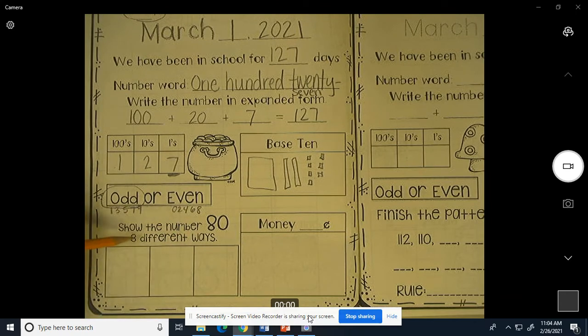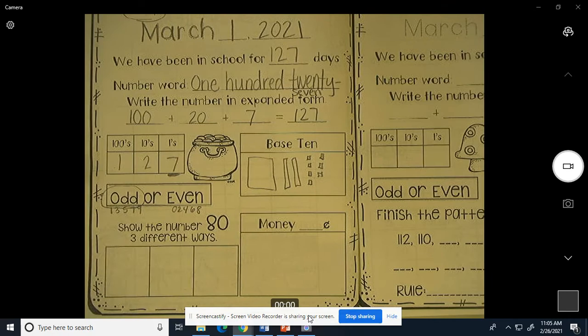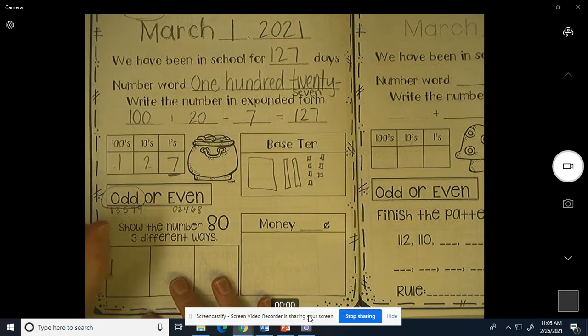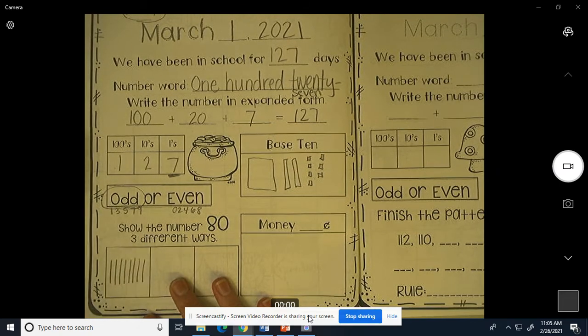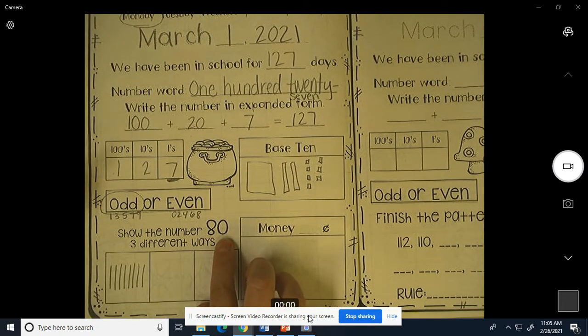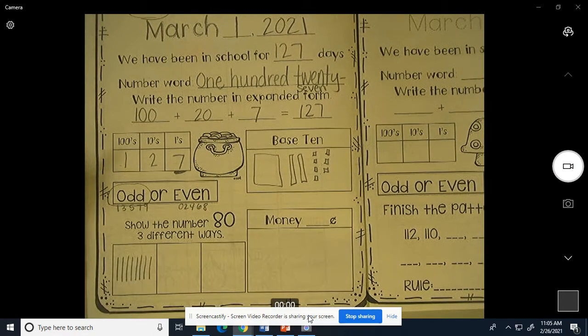Show the number 80 three different ways. Let's do base 10 first. So how many tens do I have? 8. 1, 2, 3, 4, 5, 6, 7, 8. How many ones do I have? None.